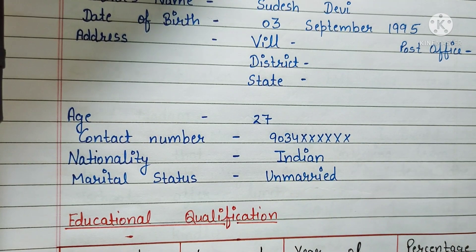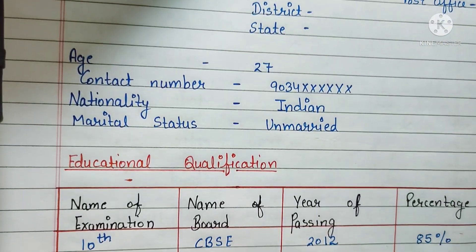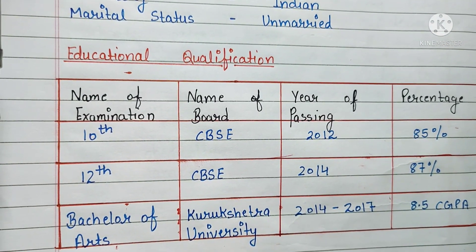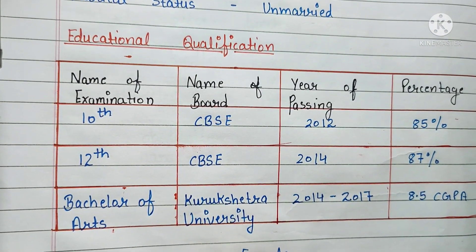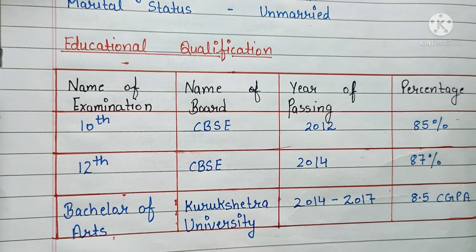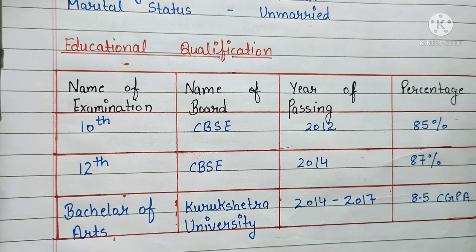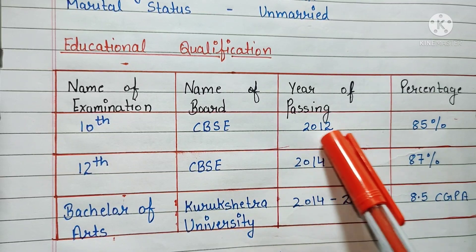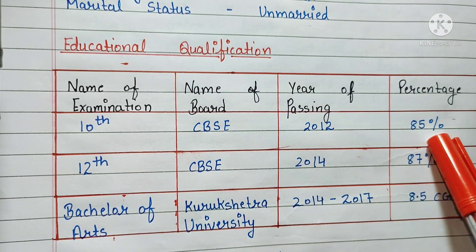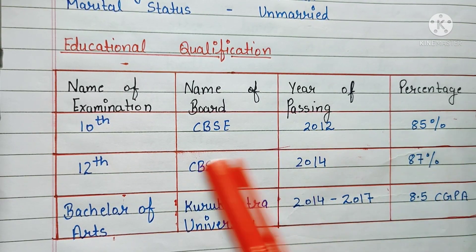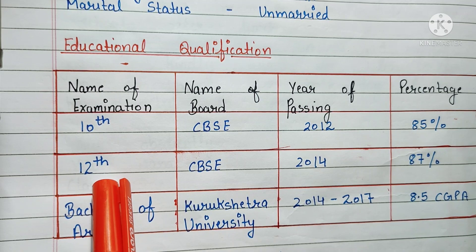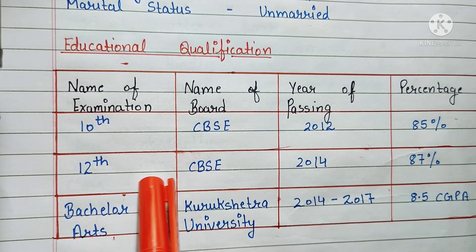After all these personal details, you have to write the educational qualifications. For example: I have done my 10th in CBSE in 2012 with 85 percent marks, and I have done my 12th class in CBSE board in 2014 with 87 percent marks.